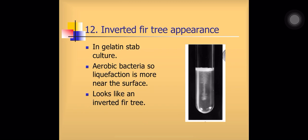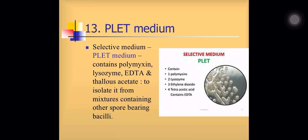Inverted fir tree appearance: in gelatin stab cultures, Bacillus anthracis being aerobic will do more liquefaction at the top surface of the medium and less at the bottom. The liquefaction gradually decreases as we go down, making it look like an inverted fir tree. PLET medium is a selective medium useful for Bacillus anthracis. It contains polymyxin, lysozyme, EDTA, and thallous acetate to isolate it from a mixture containing other spore-bearing bacteria.